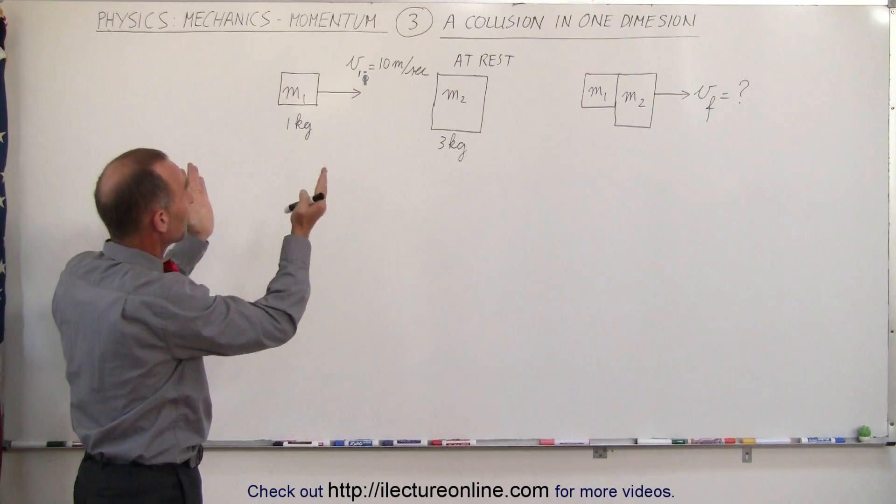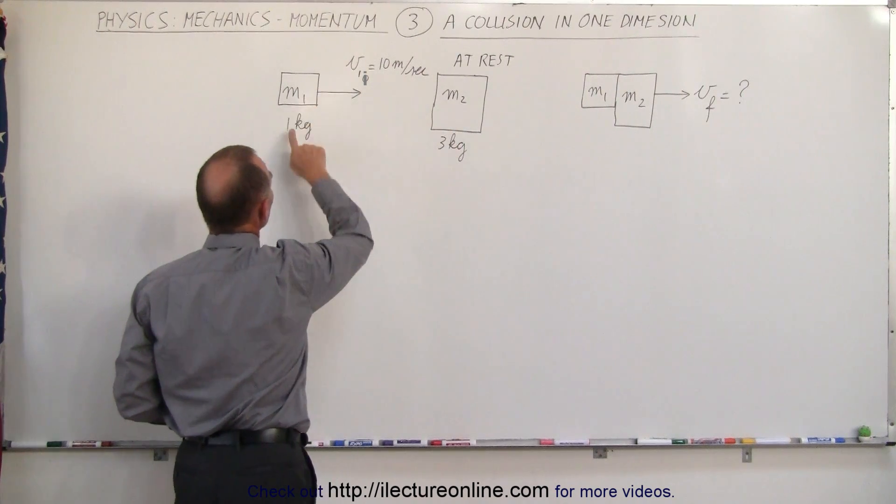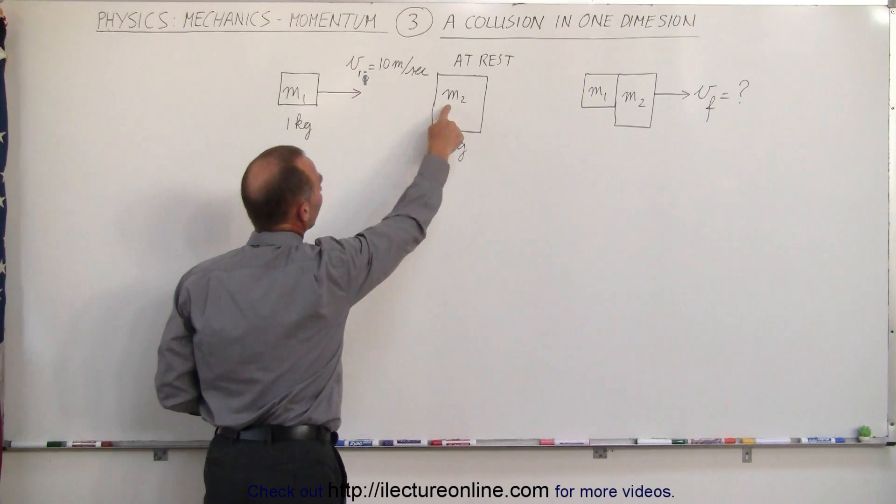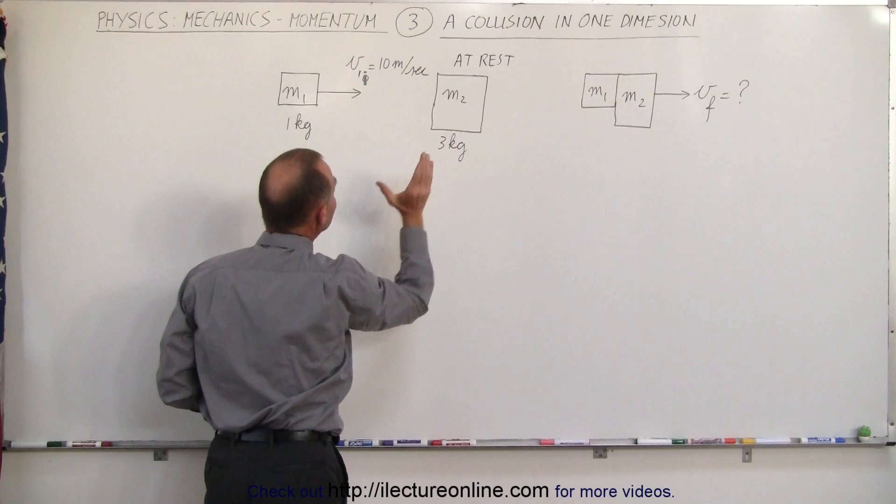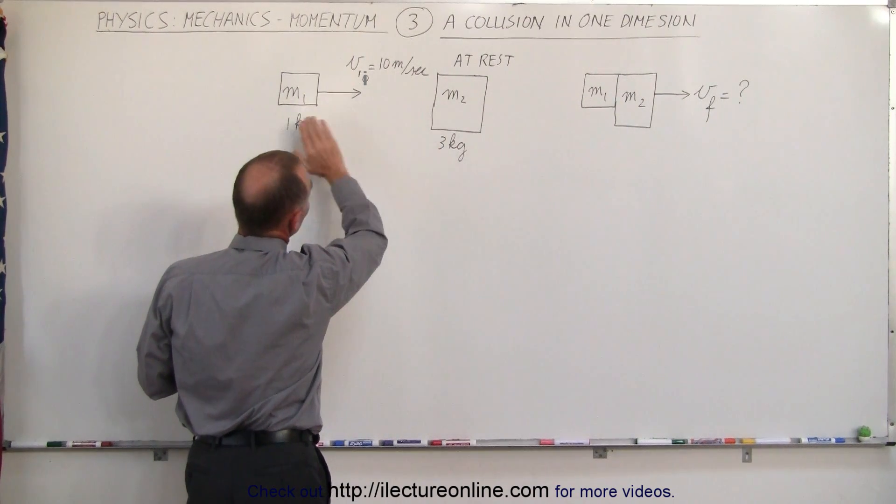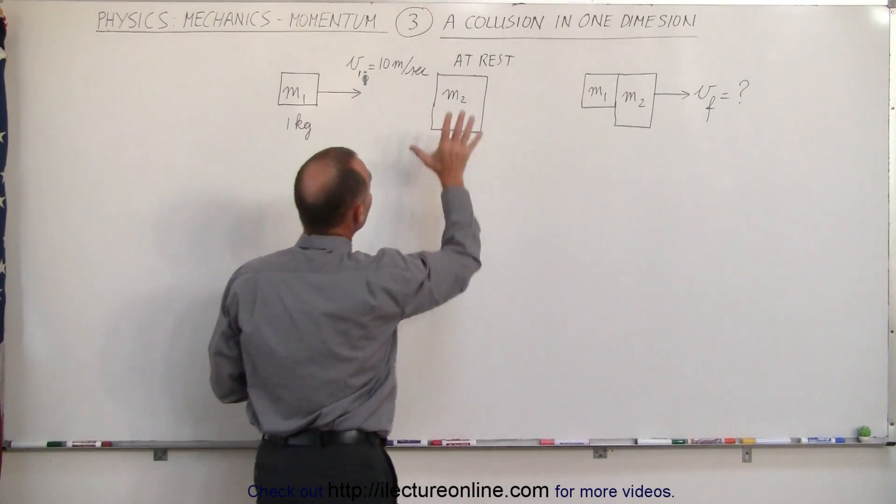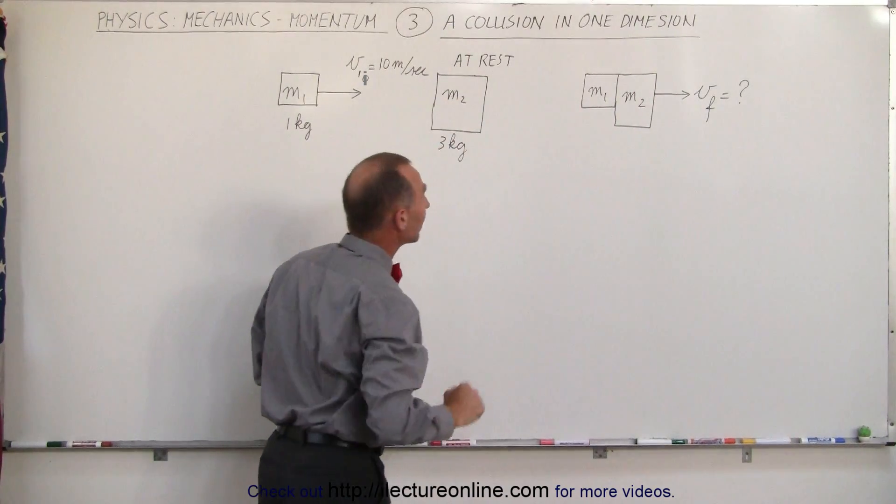So here we have the system. It's made up of two objects, M1 and M2. M1 has a mass of 1 kilogram, M2 has a mass of 3 kilograms. Initially, before the collision, M1 is moving at 10 meters per second to the right, which means a positive velocity, and M2 is simply at rest.